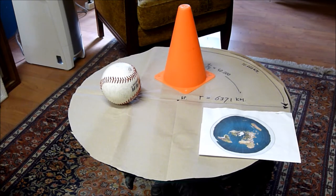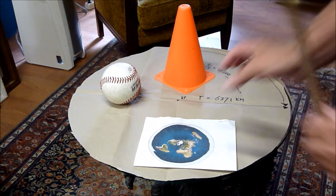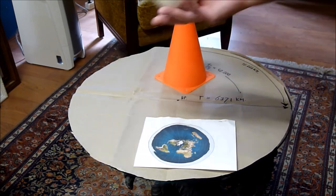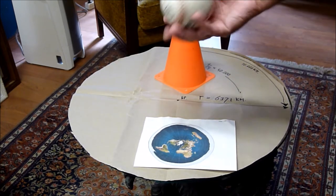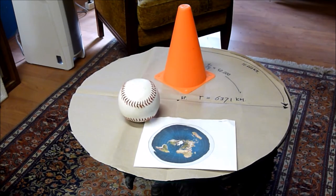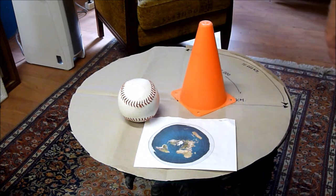En dus nou is alleen nog de vraag: er zijn diverse dingen die een omtrek kunnen hebben van een evenaar van 40.000 kilometer. Het kan dus die platte aarde zijn hier, waarvan ik even alleen dit stuk eruit heb gehaald en hier neergelegd. Het kan natuurlijk een bal zijn, die is fijn in alle richtingen. Heeft die dezelfde omtrek, 40.000 kilometer. Het zou een konus kunnen zijn.